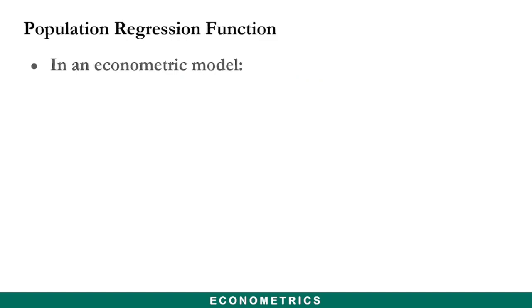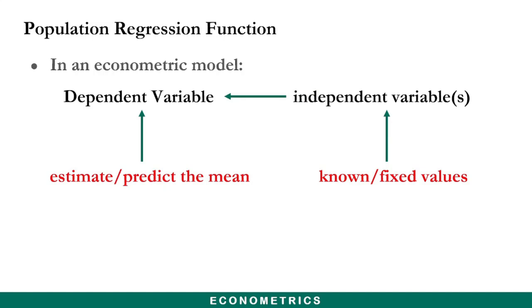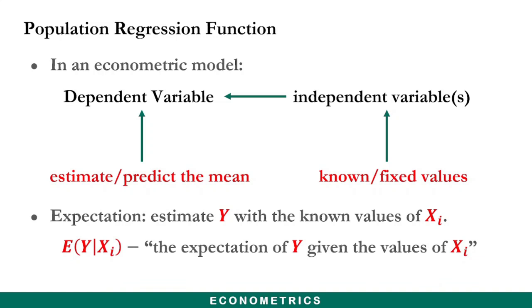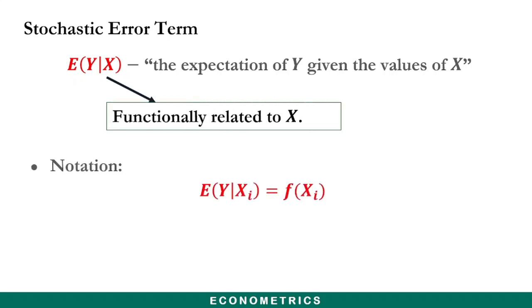In an econometric model, we are interested in using the known values of the independent variables in order to estimate or predict the mean of the dependent variable. Therefore, our expectation is to estimate the dependent variable with the known values of the independent variables. So we normally represent it as this, where it reads the expectation of y given the values of x. This expectation of y given the values of x is functionally related to x, and so the notation reads: the expected value of y given the values of x is a function of x.